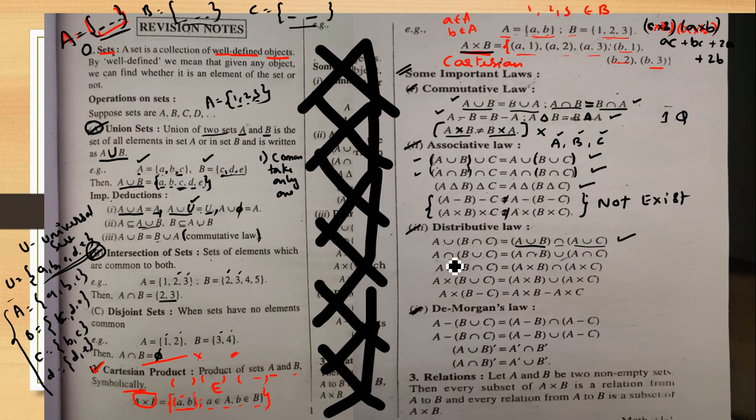Breaking it down: A intersection B — one set. A intersection C — another set. A intersection B is one set, then the middle operator is union, giving: (A intersection B) union (A intersection C). This example is simple.